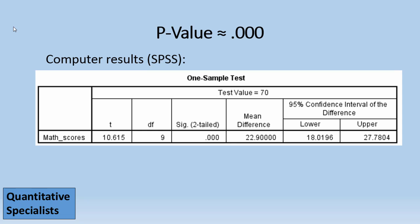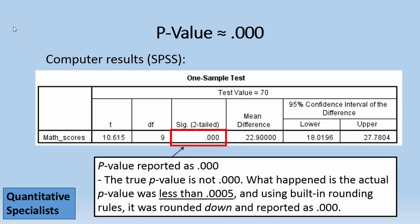So here's an example of a p reported as .000 in computer output. Now it's important to note that the true p-value is not really .000. What happened is that the actual p-value was less than .0005 and using built-in rounding rules it was just rounded down and reported as .000 by SPSS in this example here.